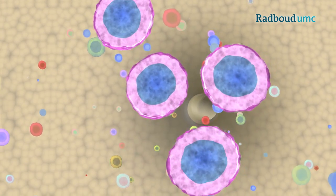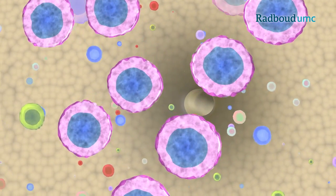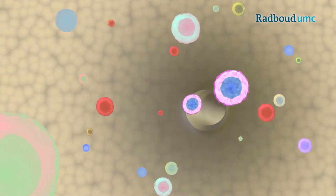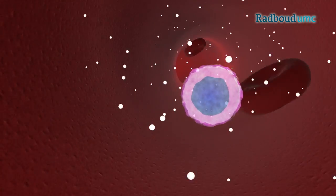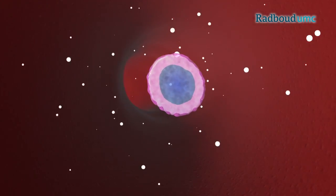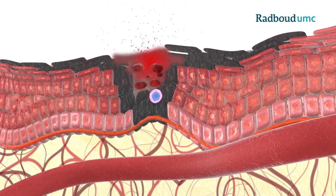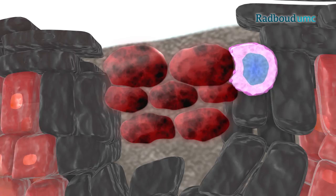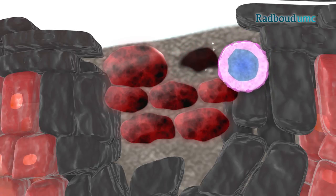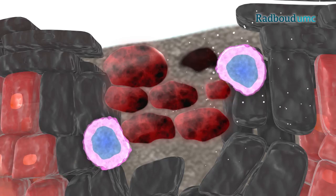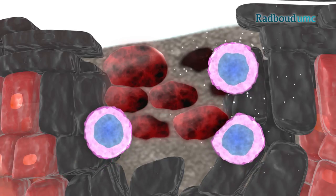They multiply extensively and leave the lymph node several days after the initial activation. Thereafter, they pass over into the blood circulation to scan the body for tumor cells. When they recognize a melanoma cell, they initiate a suicide program in this cell, called apoptosis, and start to secrete molecules to recruit further killer T cells to this site.